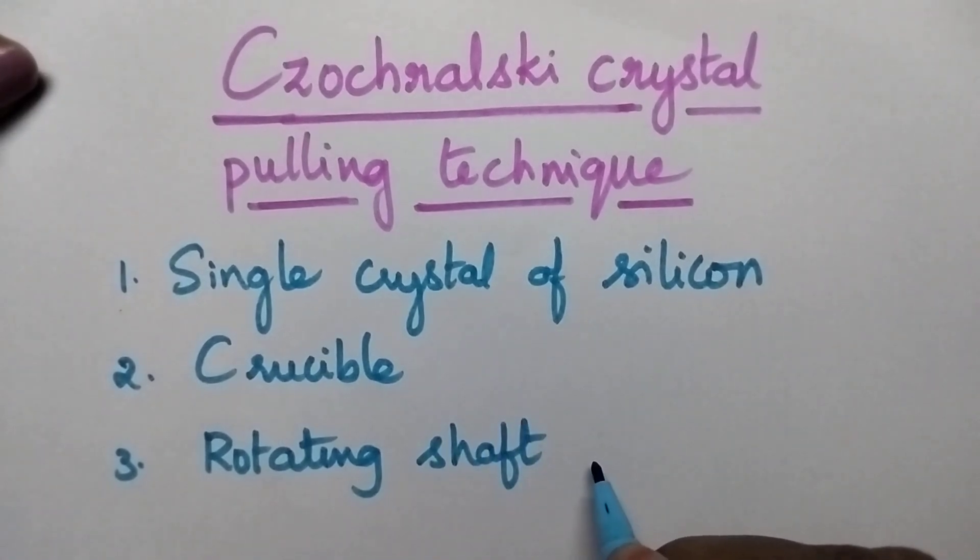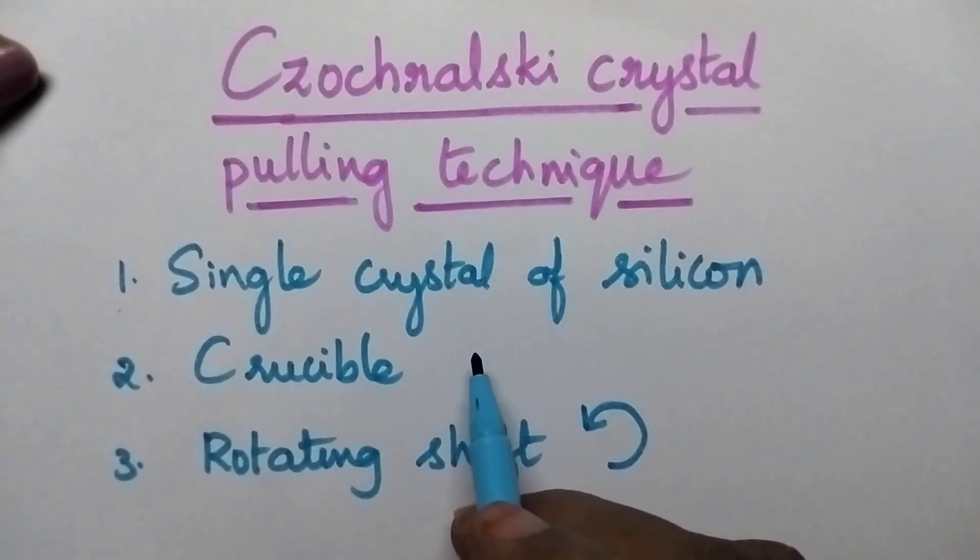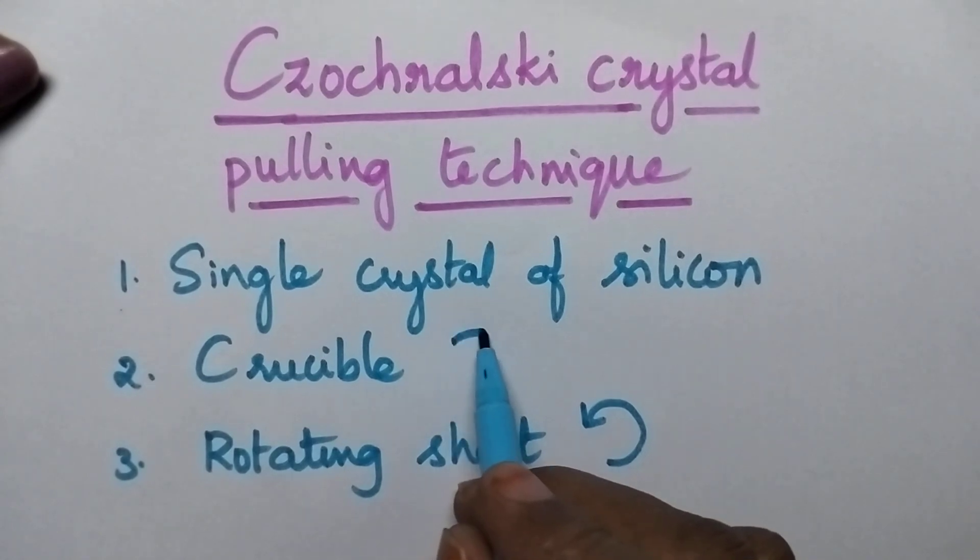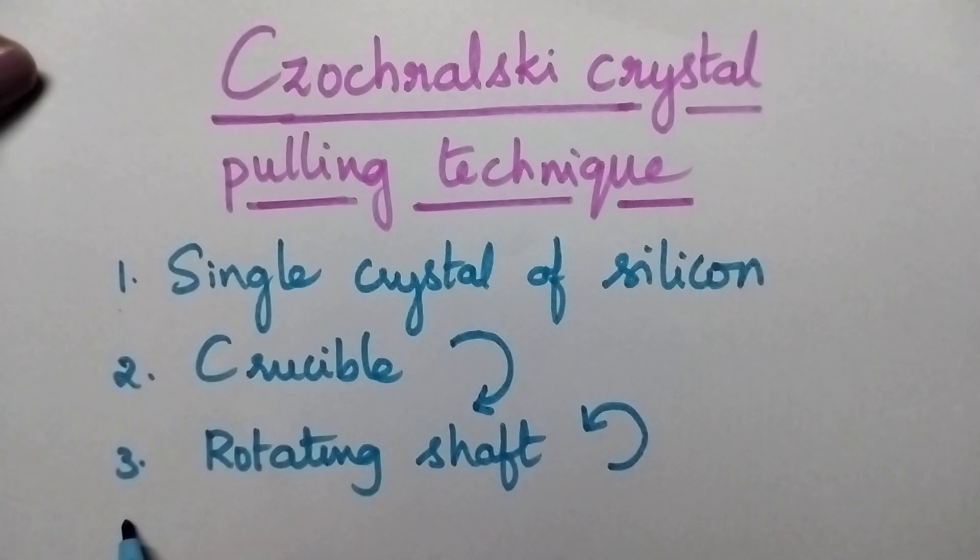The rotating shaft is capable of moving in anti-clockwise direction, whereas the crucible is capable of rotating in clockwise direction, and always the rotating shaft is supported with the seed crystal.